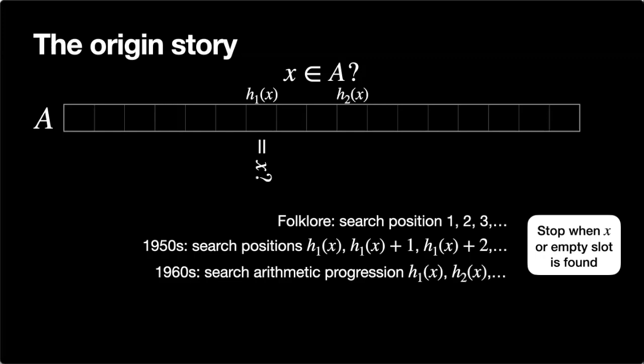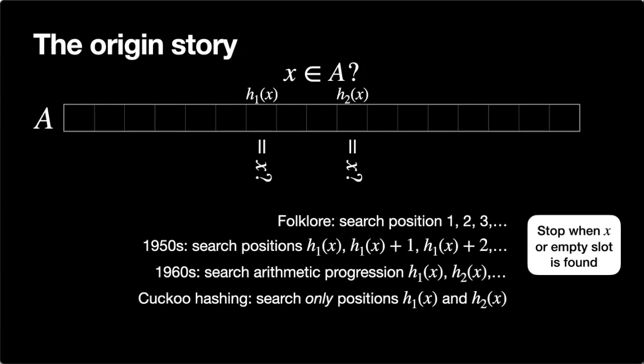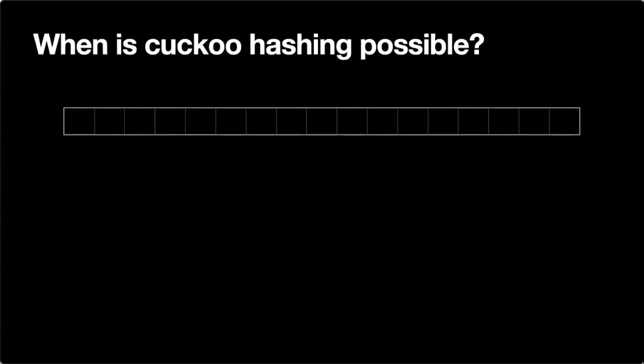In the 1960s, a refinement was explored that used not one but two hash functions. You would start by looking at position h1(x), then at position h2(x) — another random position — and then proceed in an arithmetic progression with the same step size, until you find x or an empty slot. This works better when the array is close to being full. In cuckoo hashing, we search only positions h1(x) and h2(x), so if x is in the set, it must be in one of those two positions.